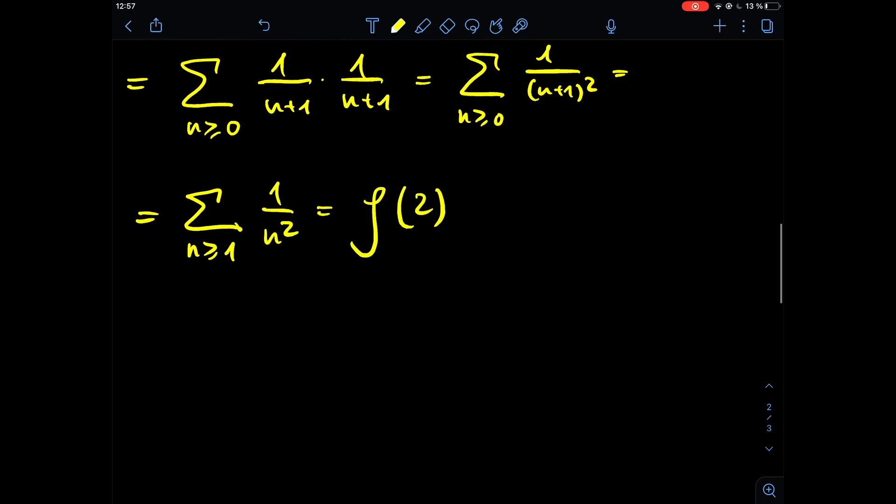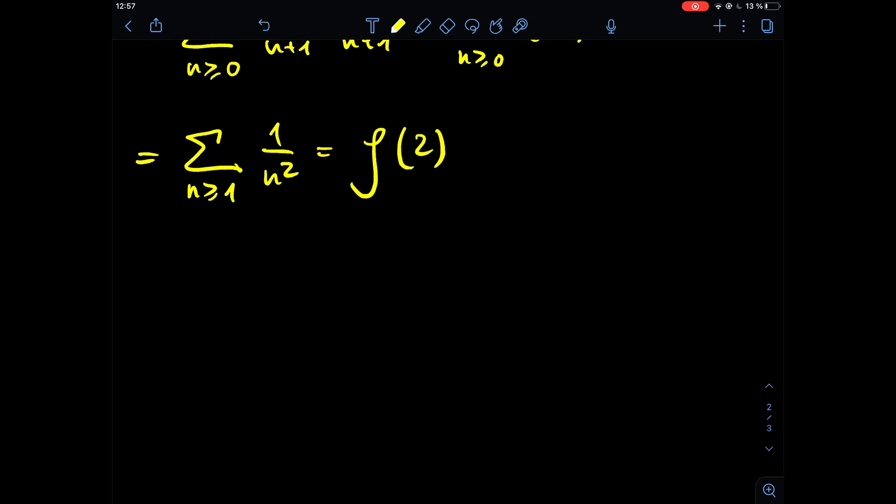And this is known as the zeta function of 2, and the solution of this has been found by Euler in the 18th century and is pi squared over 6.